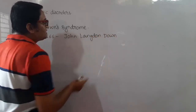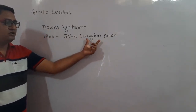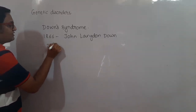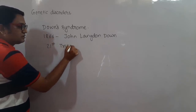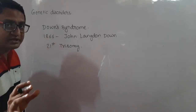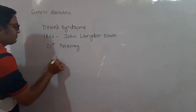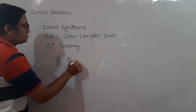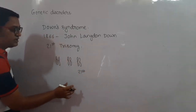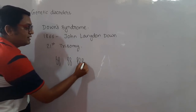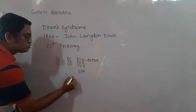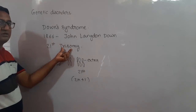Down syndrome was discovered by John Langdon Down, who first described it in 1866. It is a 21st trisomy. Normally our body has 23 pairs of chromosomes. In Down syndrome, the 21st pair has an extra chromosome — instead of two, there are three — making it 2N+1, called trisomy.